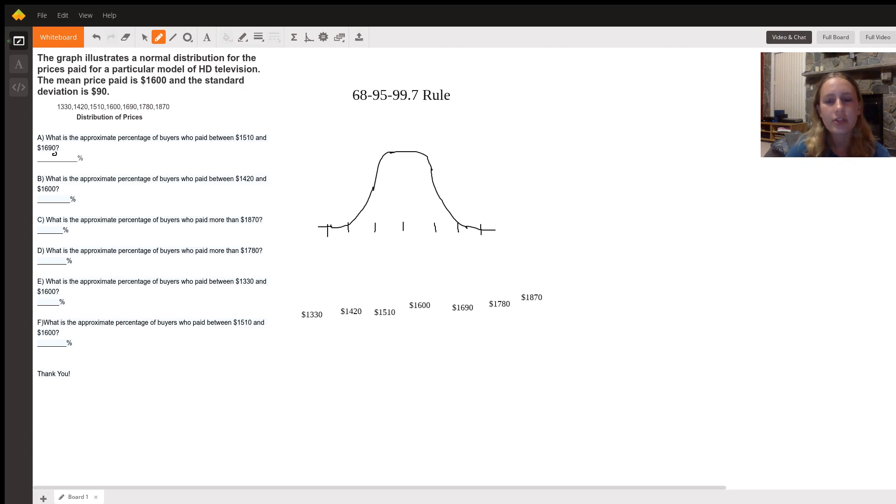So first, let's look at the problem. It says that the graph illustrates a normal distribution for the prices paid for a particular model of HD television. The mean price paid is $1,600, and the standard deviation is $90.